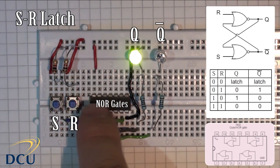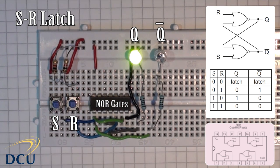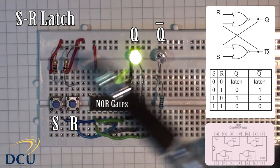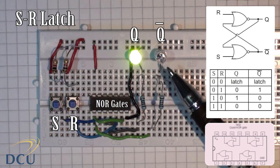If I press one of the buttons, so if I press the S button, you'll see no change because we're remaining set. So the green LED refers to Q and then the red LED refers to Q bar.